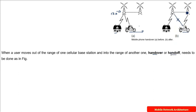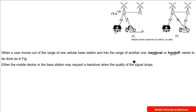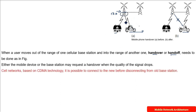In order to shift from one base station to another, for example if you are talking and you change base stations, either the mobile device or the base station — because signal quality is dropping — may request a handover. In cell networks based on CDMA technology, it is possible to connect to the new base station before disconnecting from the old one.